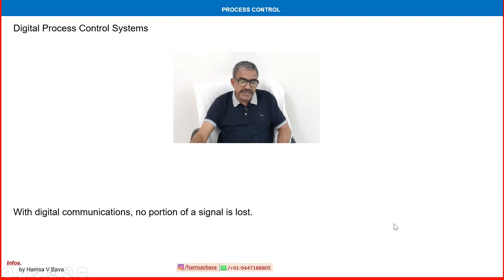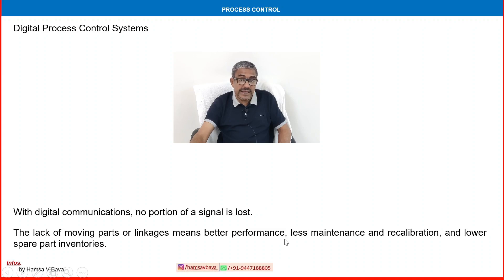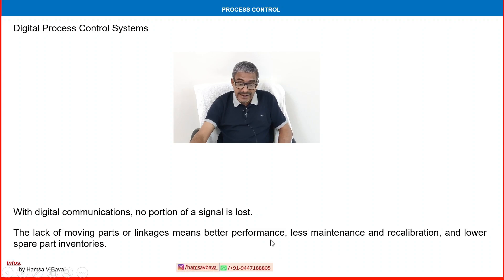The most obvious advantage of the digital system is improved accuracy and response. With digital communication, no portion of a signal is lost. The lack of moving parts or linkage means better performance, less maintenance and recalibration, and lower spare part inventories. Running costs will be much lower due to better performance, less maintenance, and lower spare part inventory — significant savings from the cost side.